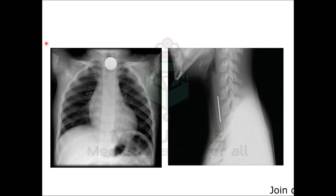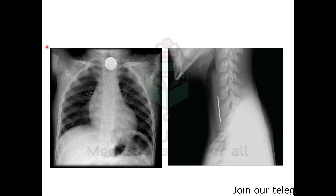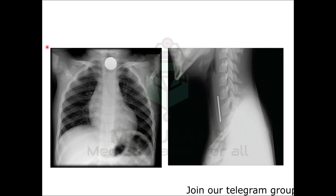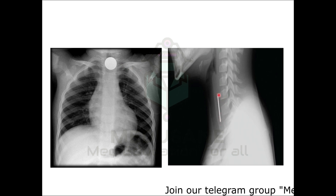This is the first and most common investigation for a patient with a foreign body in the food passage. Two important points: first, whenever we plan to remove a foreign body in the OT, we should always get a fresh X-ray done just prior to taking the patient in, because if we rely on an old X-ray the foreign body might have moved lower down. Second, a coin always lodges in the esophagus in such a way that it appears circular on AP view.